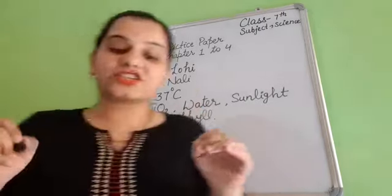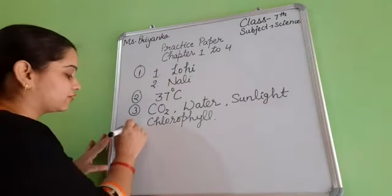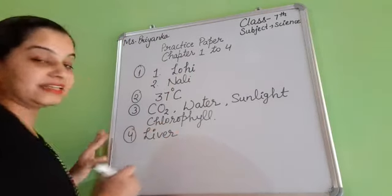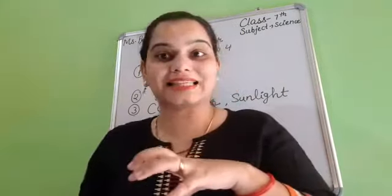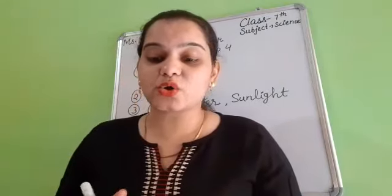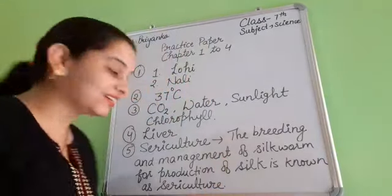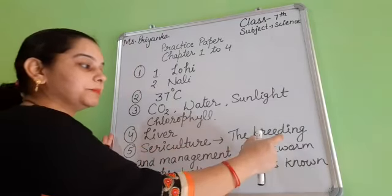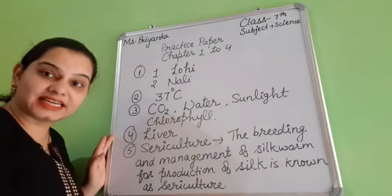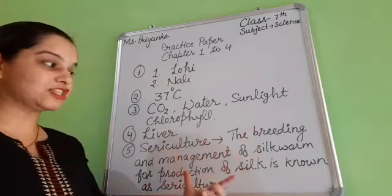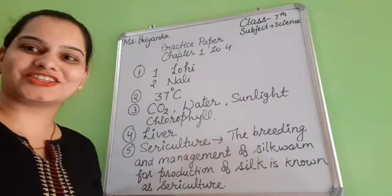Now next question: which is the largest gland in human body? Human body ke andar jo largest gland hai voh kaun si hai? That is liver. Liver is the largest gland. Joh kya secrete karti hai? Bile secrete karti hai, aur usko store kisme karti hai? Gall bladder ke andar. Now, define sericulture. The breeding and management of silkworm for production of silk is known as sericulture. Yanni ki jab hum breeding aur management karte hain silkworm ka, production of silk ke liye, toh us process ko hum sericulture kehte hain.